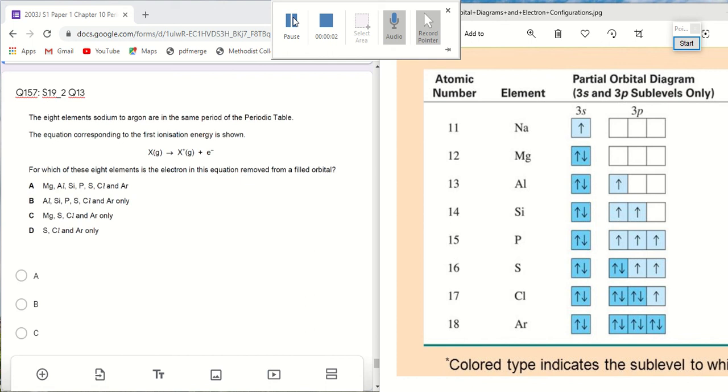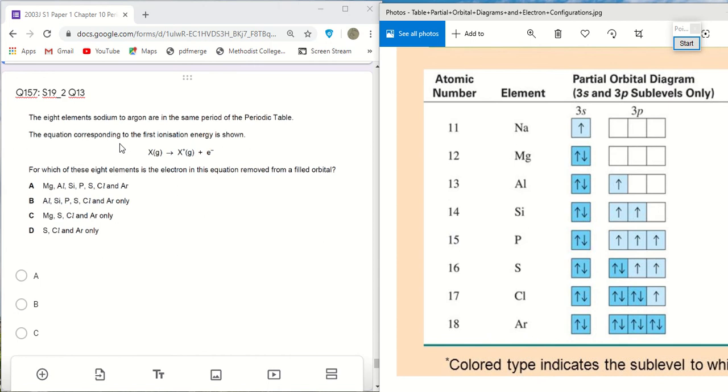Okay, now let's look at Chapter 10, Question 157. This question is about first ionization energy, that means the first electron removed from an atom.